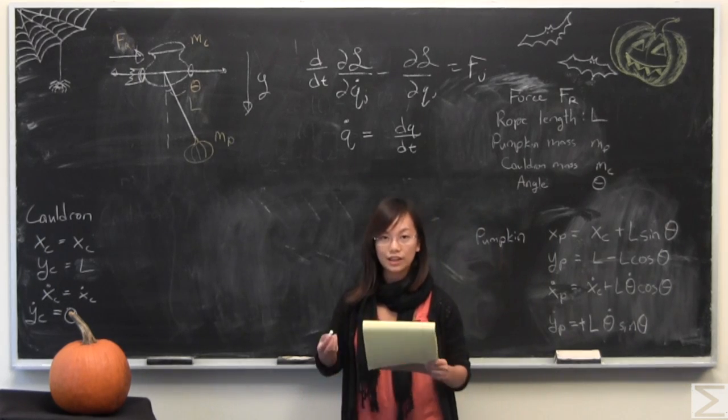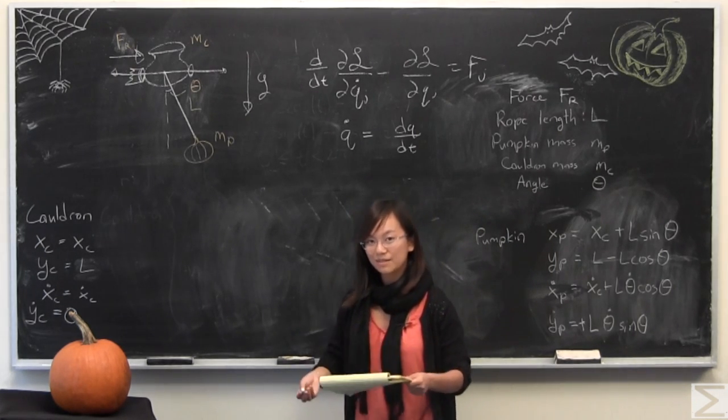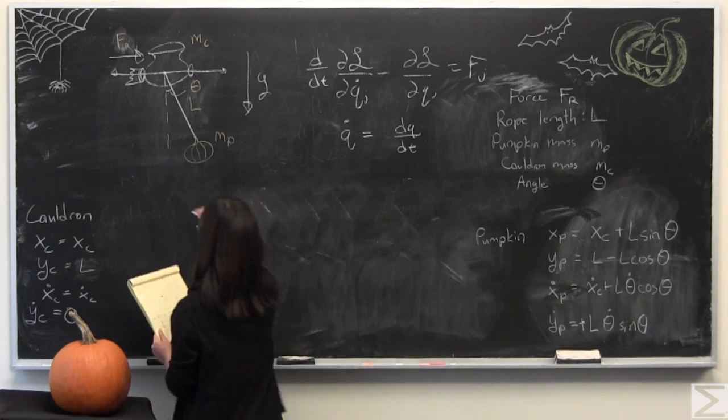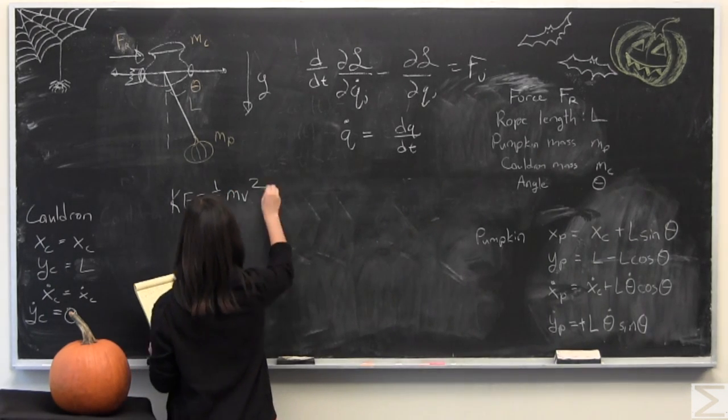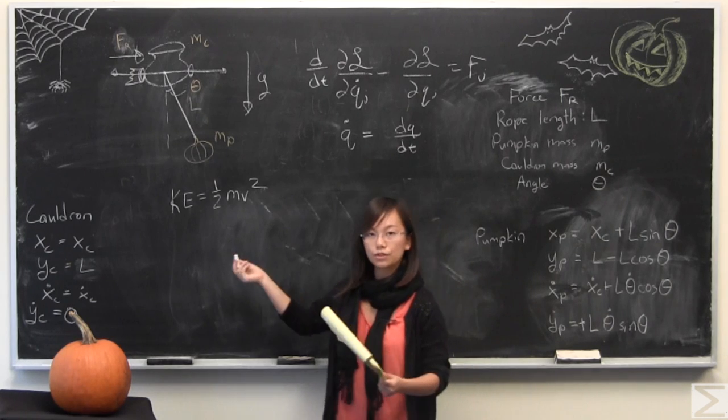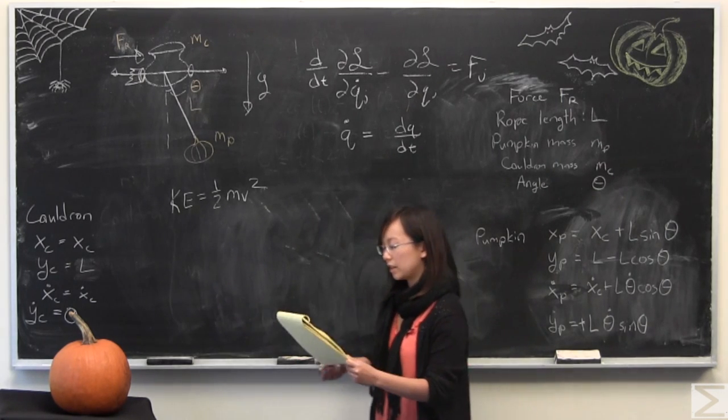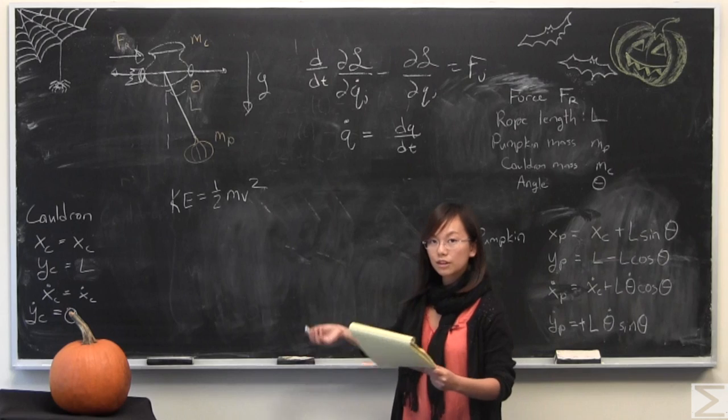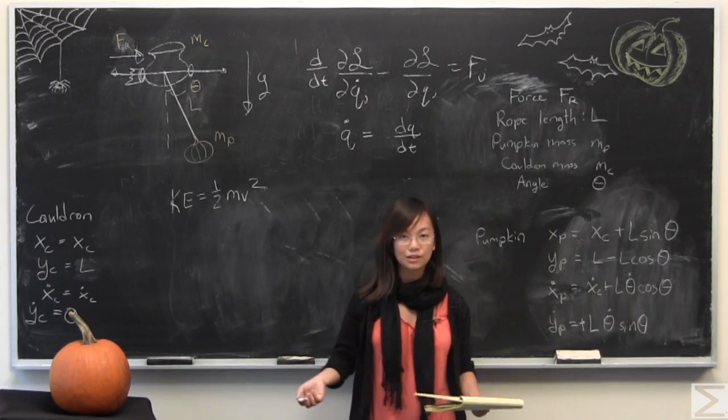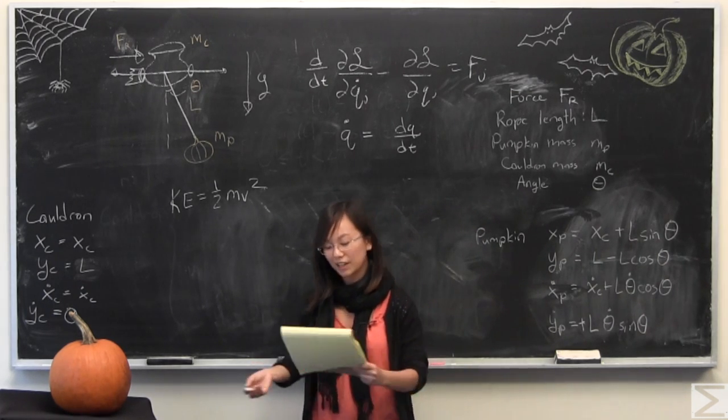First I'm going to do the kinetic energy, which is T, which is half mv squared, if you've taken a physics course. I'm going to plug in the components for each one, and I'm going to use the respective masses depending on how they're moving. I'm going to calculate velocity squared separately, and then I'm going to plug it in.